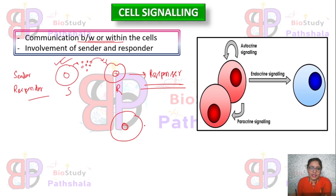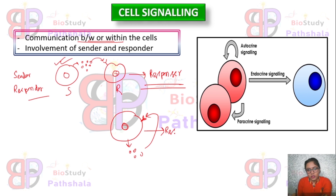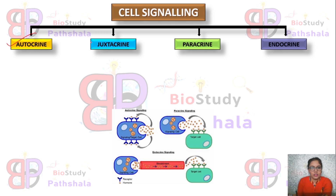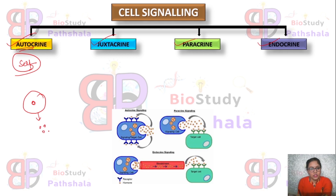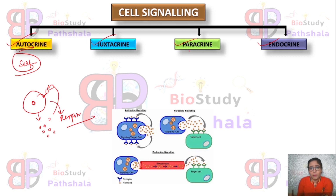In the case of within-cell communication, one cell produces factors and also bears the receiver for receiving those factors and shows the response. This kind of cell signaling is mainly known as autocrine signaling. Cell signaling is of four types: autocrine, juxtacrine, paracrine, and endocrine. Auto means self, so one cell generates the factors and also has the receptor to receive them. Juxtacrine, paracrine, and endocrine involve a minimum of two cells.